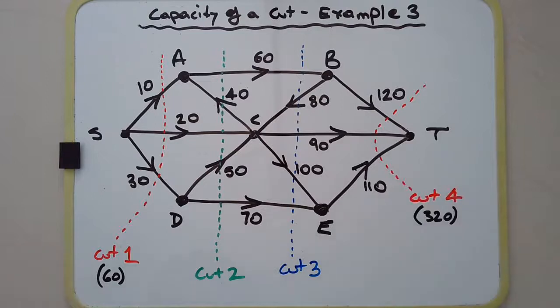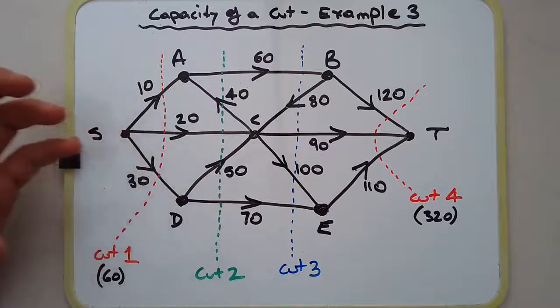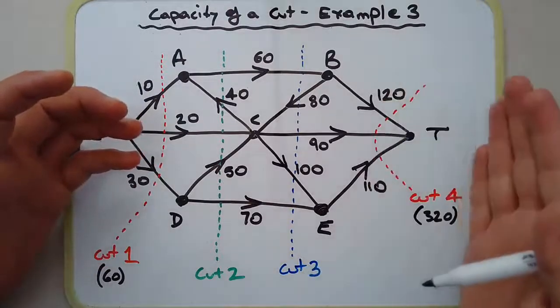If this cut tells you that the capacity of the pipes or roads is a value of 60, and this cut's 320, surely the flow cannot be more than 60. Because if this part of the network can only handle 60—say, 60 cars per minute—and this part can handle 320...